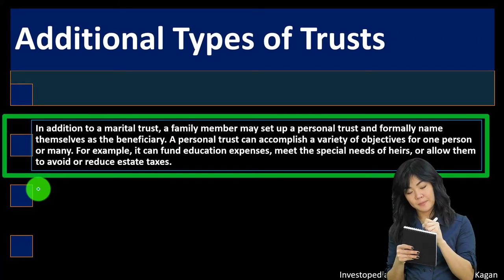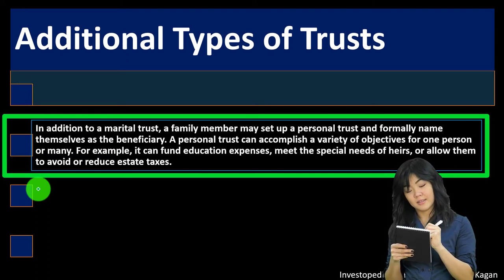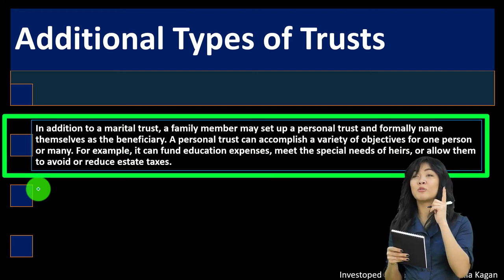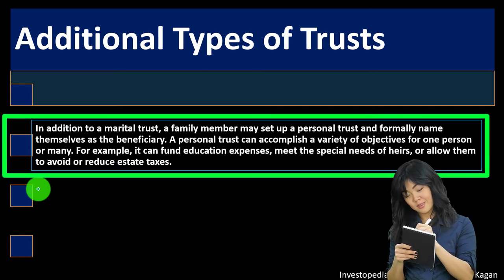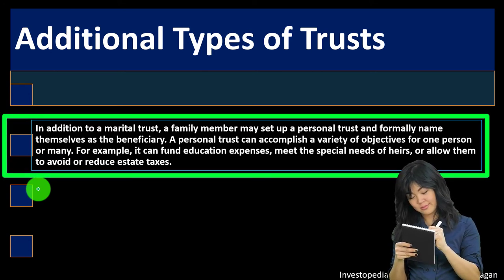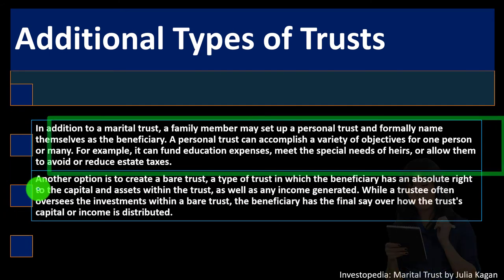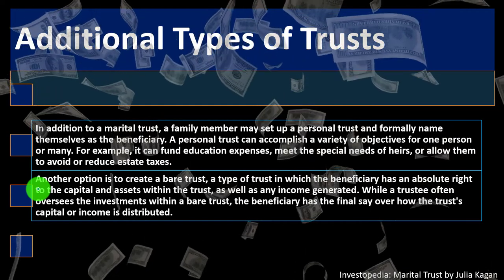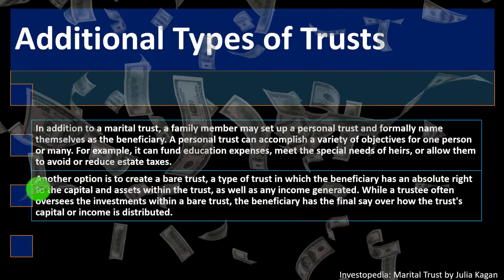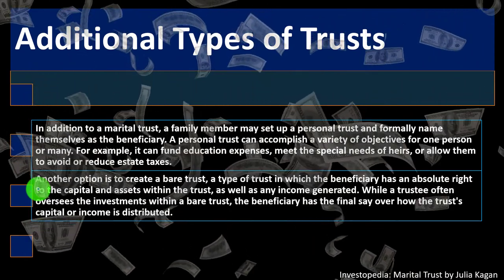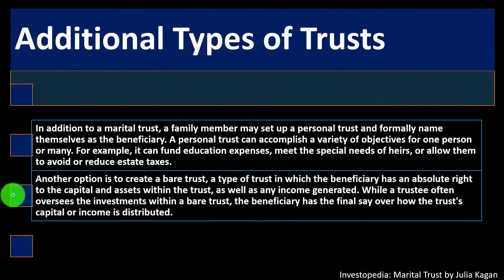In addition to a marital trust, a family member may set up a personal trust and formally name themselves as the beneficiary. A personal trust can accomplish a variety of objectives for one person or many — for example, it can fund education expenses, meet the special needs of heirs, or allow them to avoid or reduce estate taxes. As your assets grow, estate planning can get more complex, with different formats of trusts put in place to avoid estate taxes.